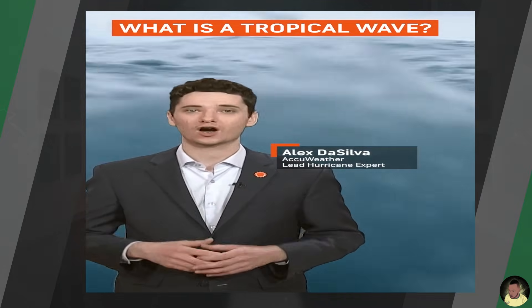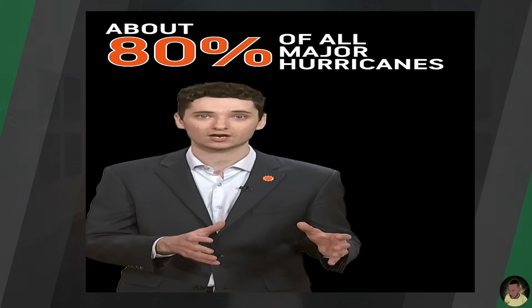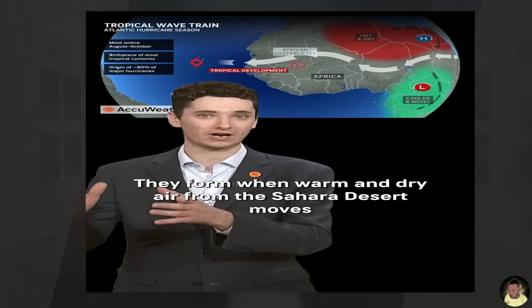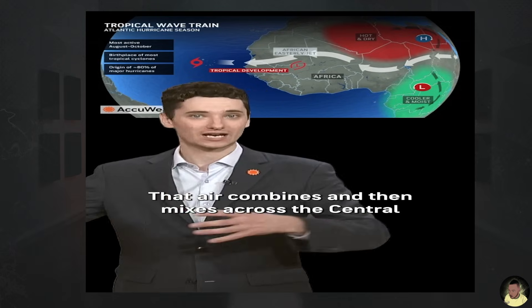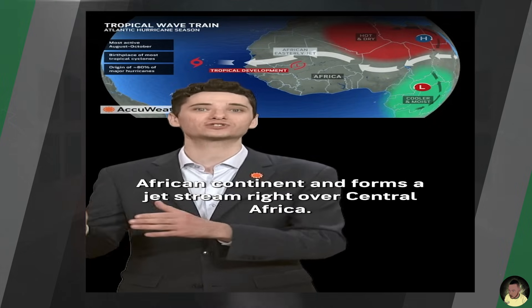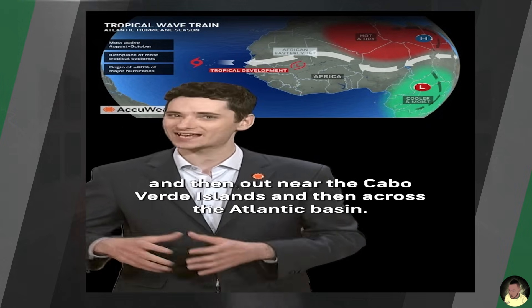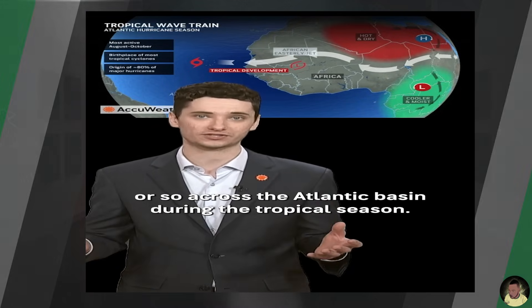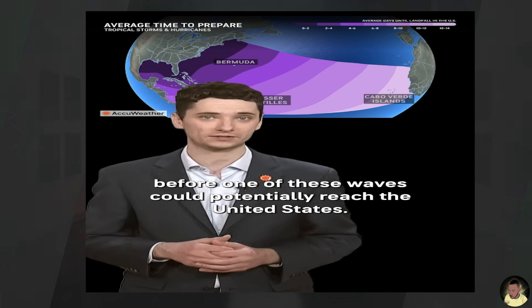Tropical waves, otherwise called African easterly waves, are the seedlings for tropical storms and hurricanes across the Atlantic basin. About 80% of all major Atlantic hurricanes were originally formed from African easterly waves. They form when warm, dry air from the Sahara desert moves south and combines with moist air from the African jungles, mixing across the central African continent and forming a jet stream right over central Africa. These clusters of showers and thunderstorms then move out near the Cabo Verde islands and across the Atlantic basin. We typically see about 60 tropical waves during the tropical season, and after a tropical wave emerges from Africa, it typically takes about 12 to 14 days before one could potentially reach the United States.